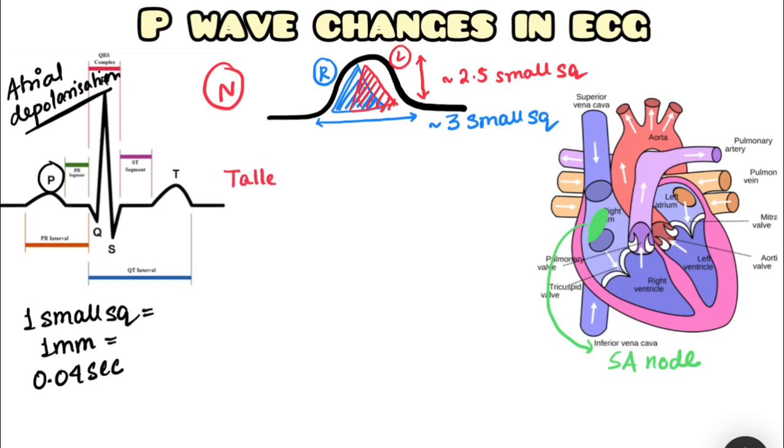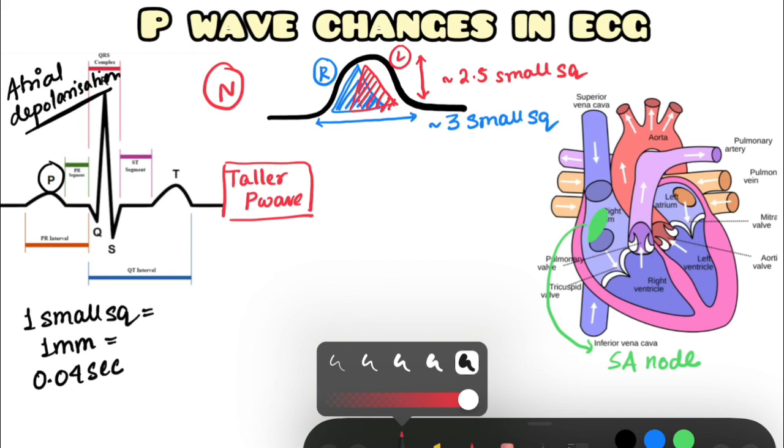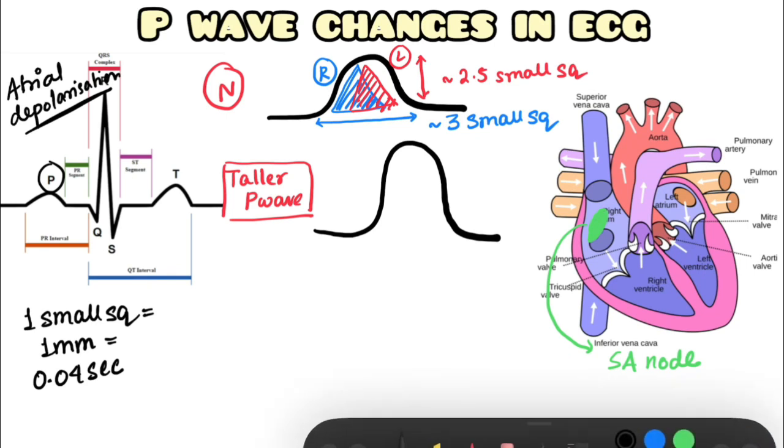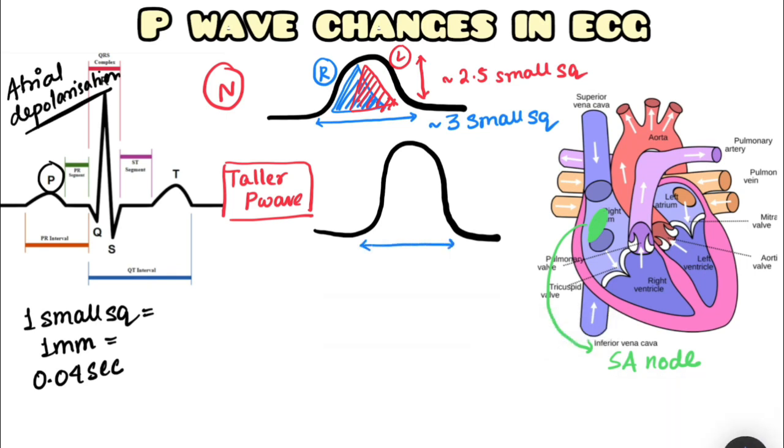A P wave can be a taller P wave, as in this case. In this case, the breadth of the P wave is the same, approximately 3 small squares, but the height is much more, greater than 2.5 small squares.